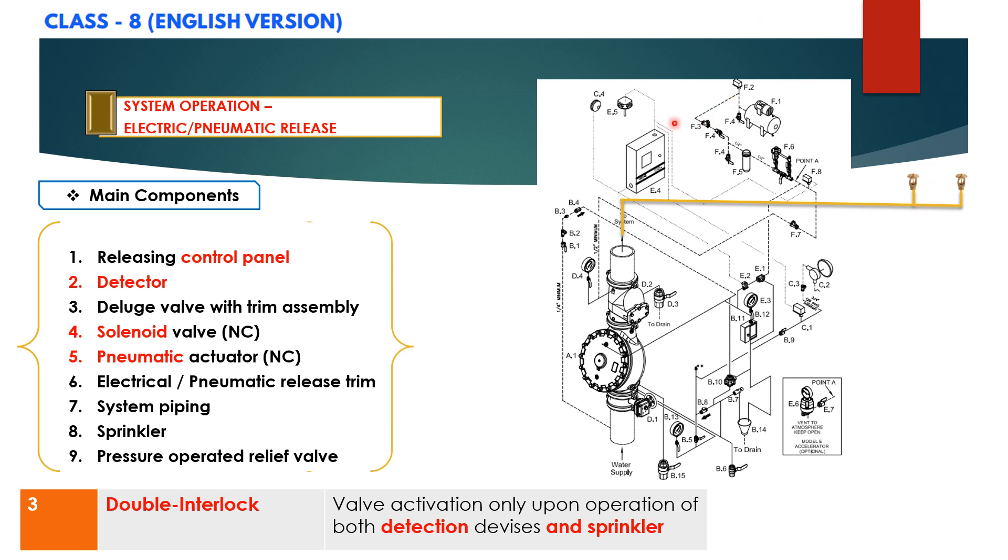In fire condition, when the detector or the detection system operates, system control panel energizes the solenoid valve E2 to open. Alarms will activate,